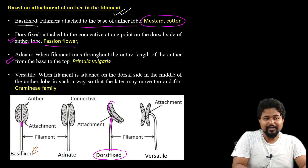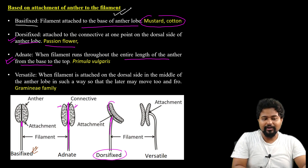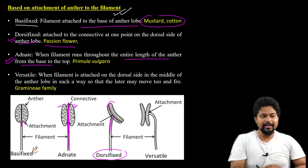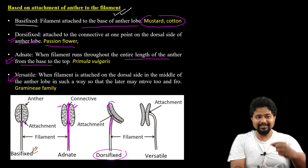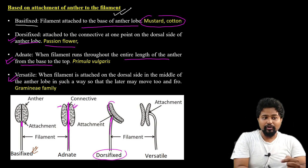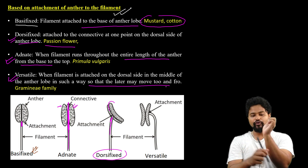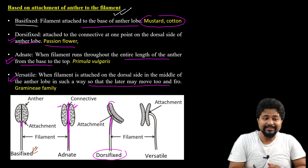Adnate means the filament runs throughout the entire length of the anther from the base to the top. Versatile means the filament is attached on the dorsal side in the middle of the anther, so the anther can move freely. An example is the Gramineae family.